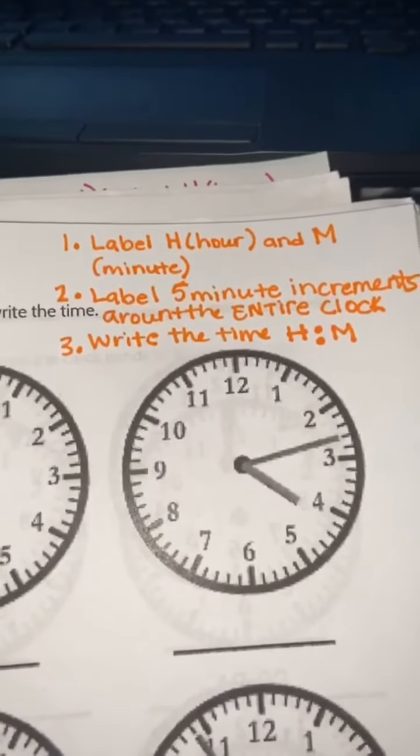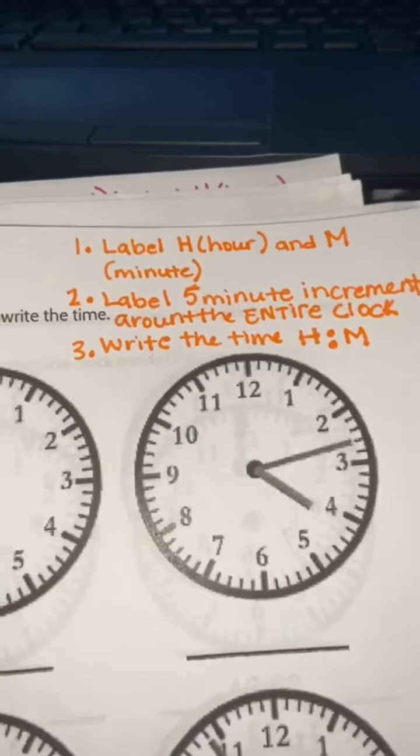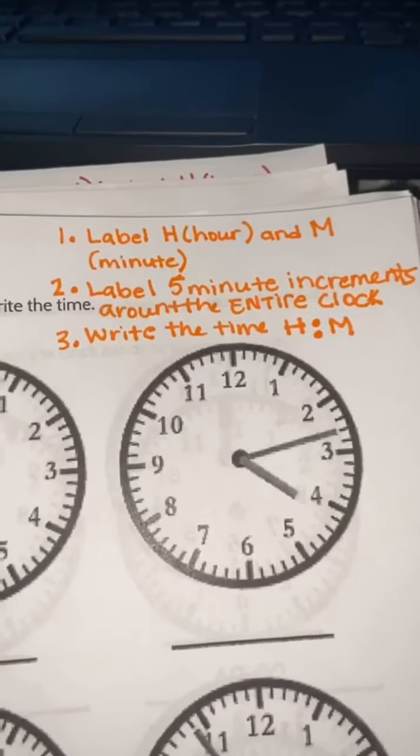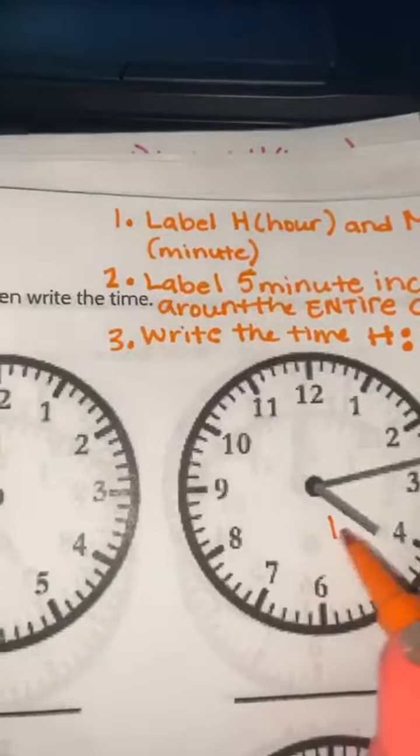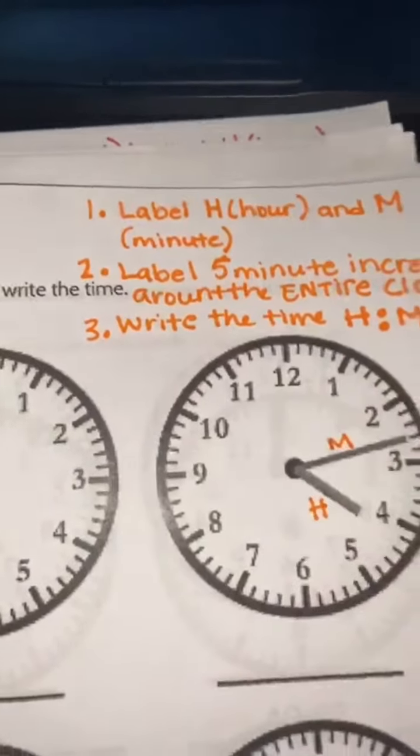Today we're going to be working on pages 8 through 10 only. First, label your hour and minute on the hands. This is my hour hand, which is the short hand, and my minute hand, which is the long hand.